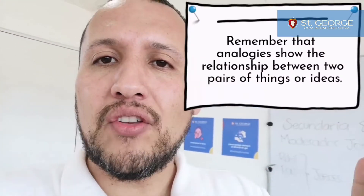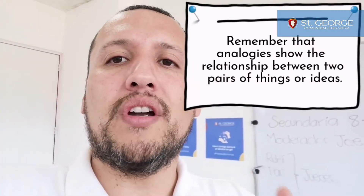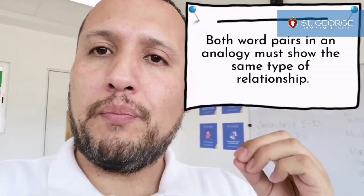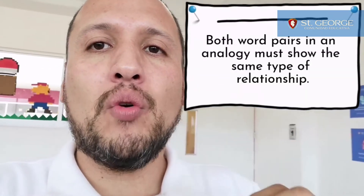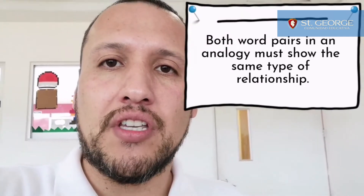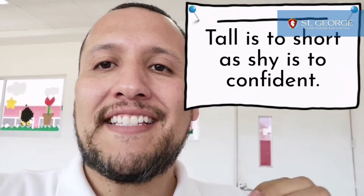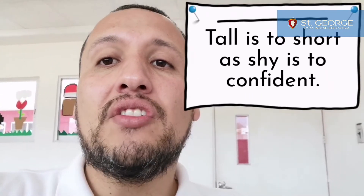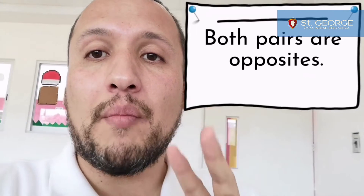Know the rule. Remember that analogies show the relationship between two pairs of things or ideas. Both word pairs in an analogy must show the same type of relationship. Example: tall is to short as shy is to confident. Both pairs are opposites.